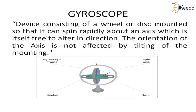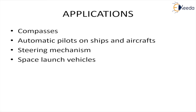Because of its working principle and its application of measuring and maintaining orientation and angular velocity, gyroscopes find use in various places. They are used in compasses, in automatic pilots on ships and aircraft to control movement while taking turns, in steering mechanisms of automobiles, in two-wheelers, for space launch vehicles, and in satellites — many places find applications for gyroscopes.